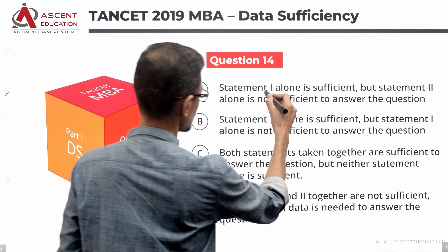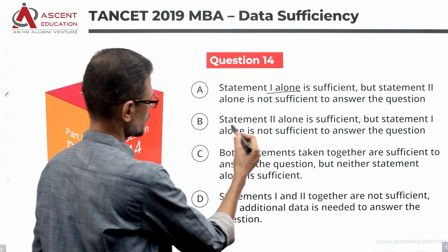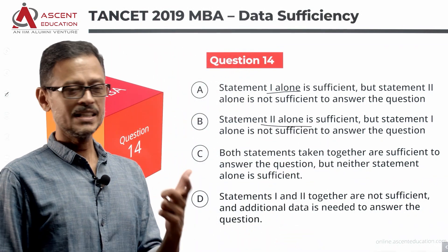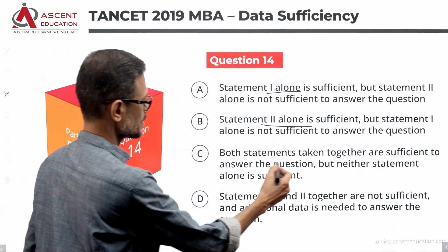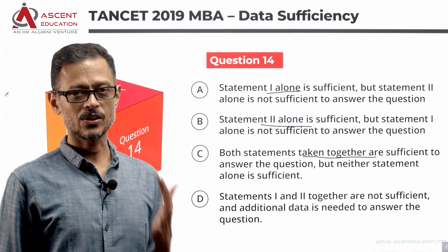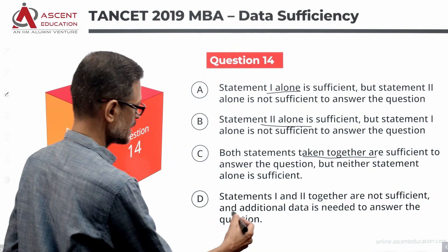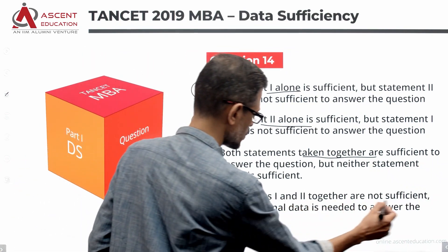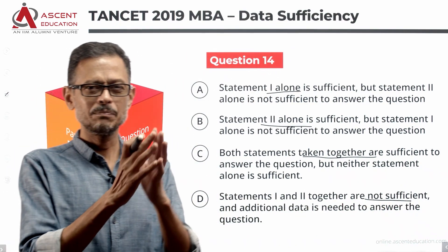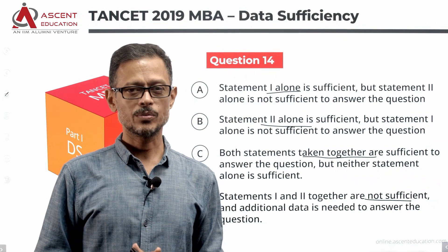Answer option A: statement 1 alone is sufficient, 2 is not. Answer option B: 2 alone is sufficient, 1 is not. Answer option C: statements taken together are sufficient, but alone they are not. Answer option D: if the given data is not sufficient, we need additional information. So typically there are four answer options.